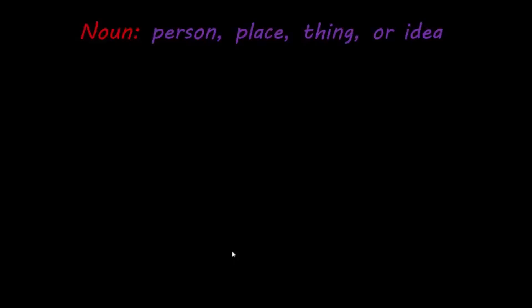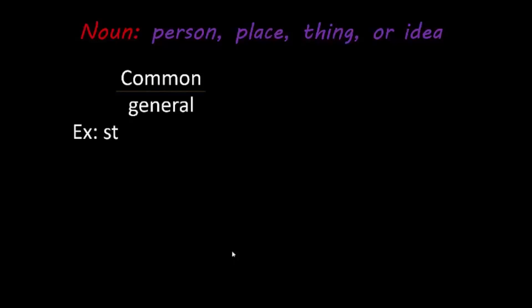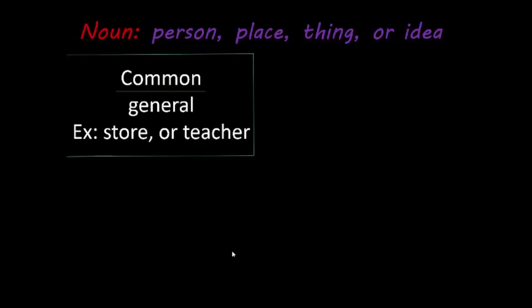And there are four types of nouns. The first one is a common noun. These are general — they're not specific at all. Some examples would be a store or a teacher. They're not naming a specific store or a specific teacher, so they're common.